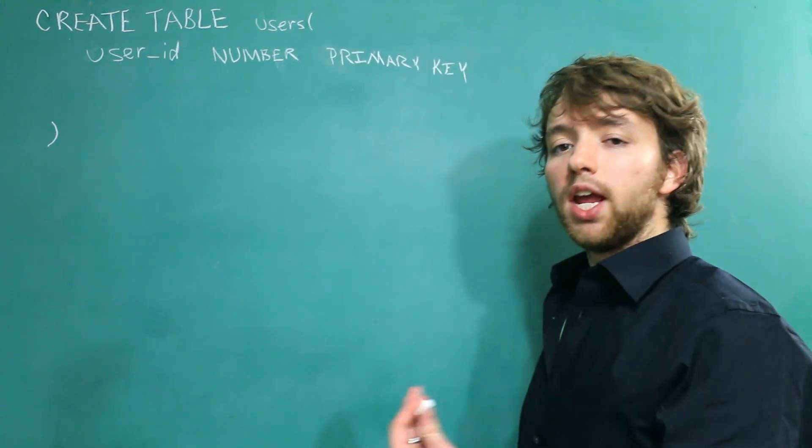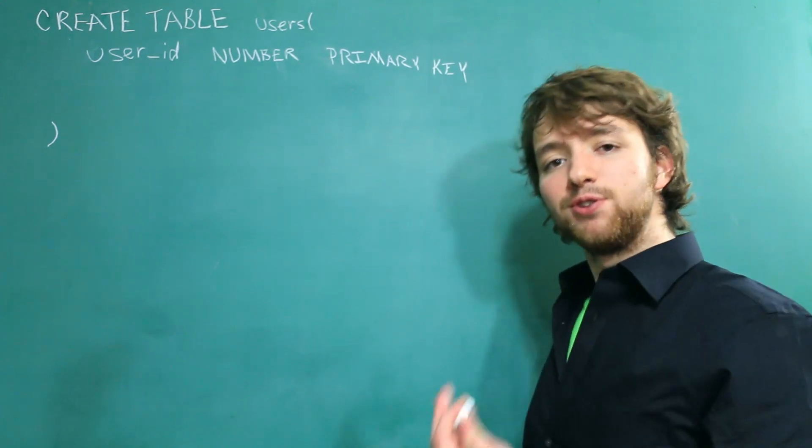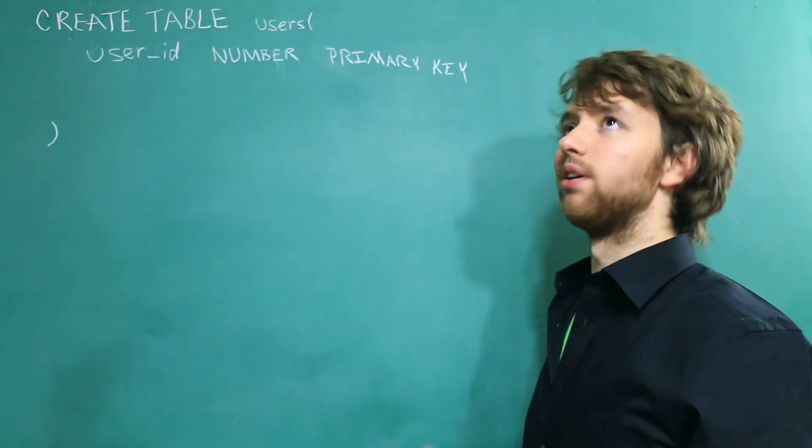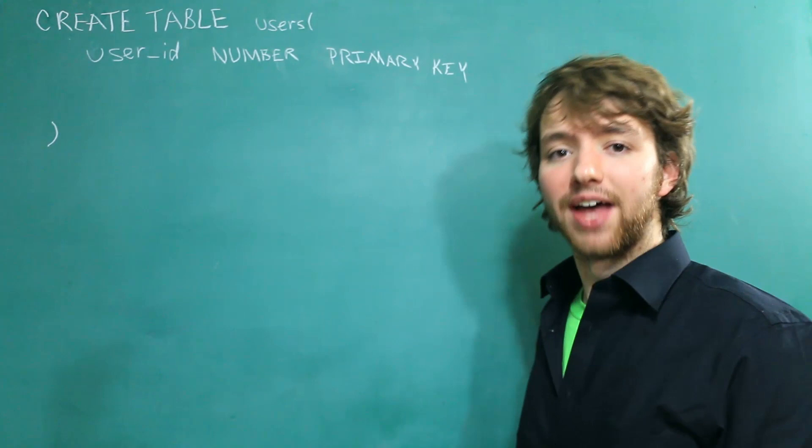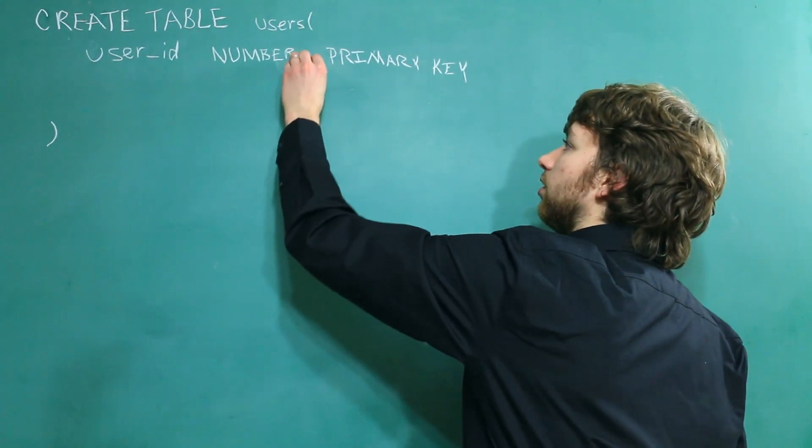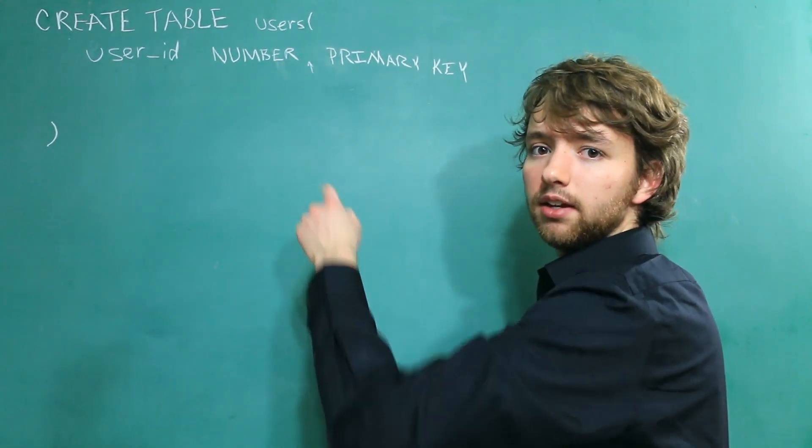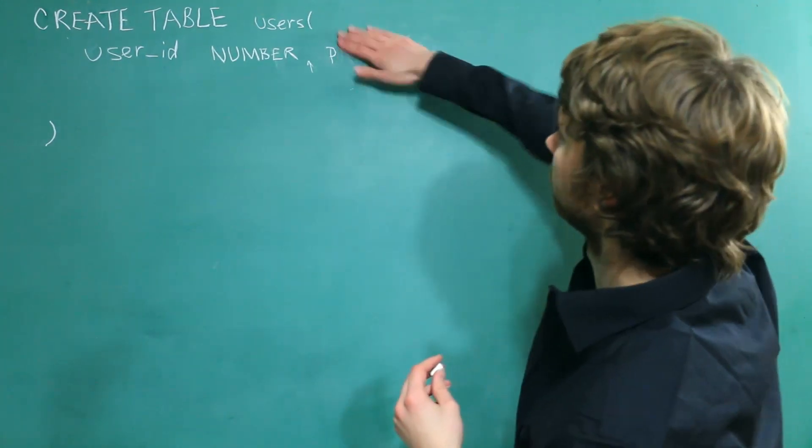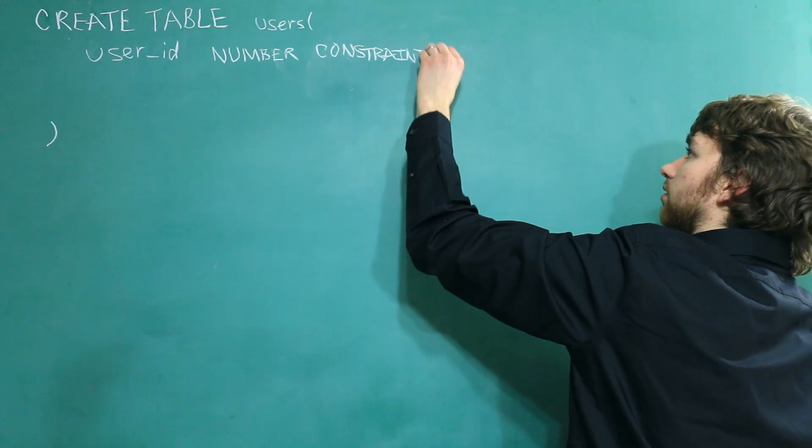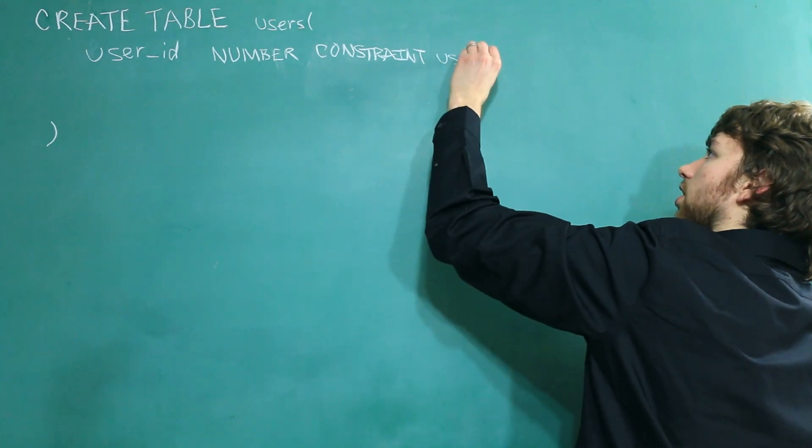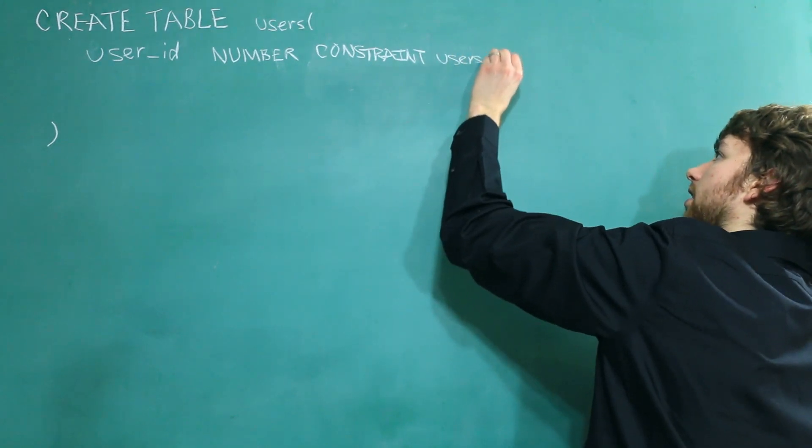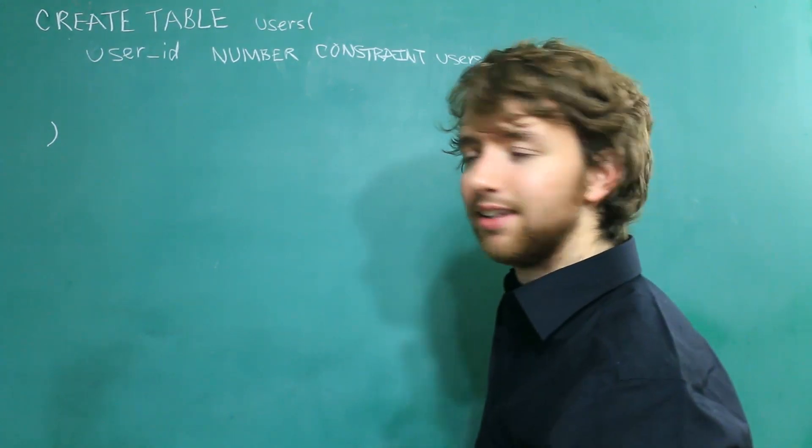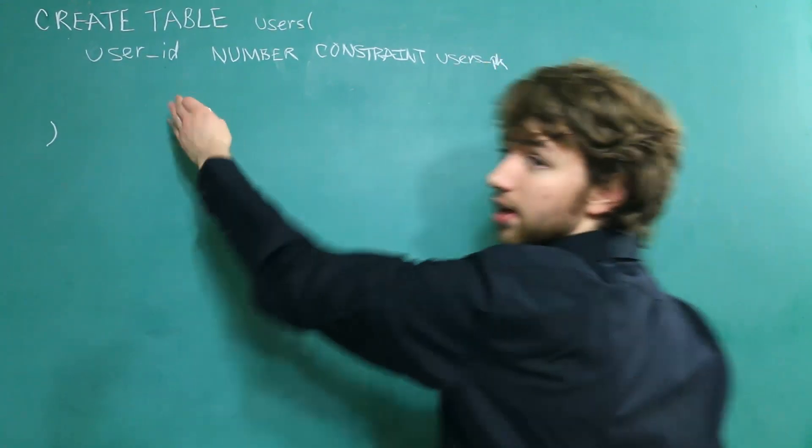Now if you want to name the constraint, you have to type two extra words. I know, it's crazy. I can't believe they're asking that much of us. So within here, you're going to write constraint and then you're going to give it a name. So it'll look a little something like this. And we'll give it a name of users_PK for primary key. And I'm just going to continue this line on the next line.